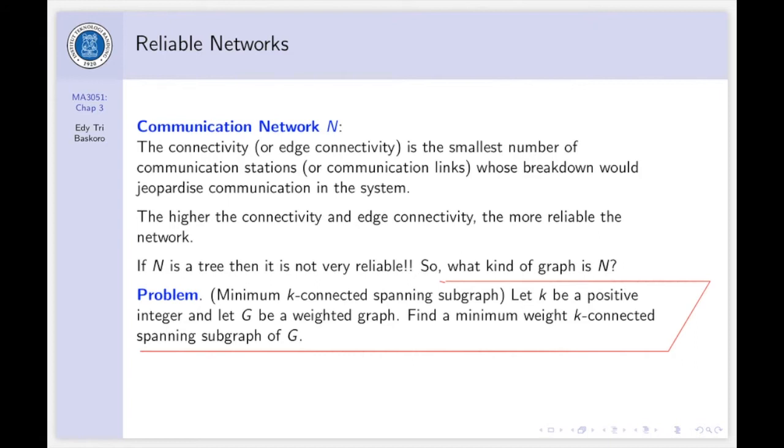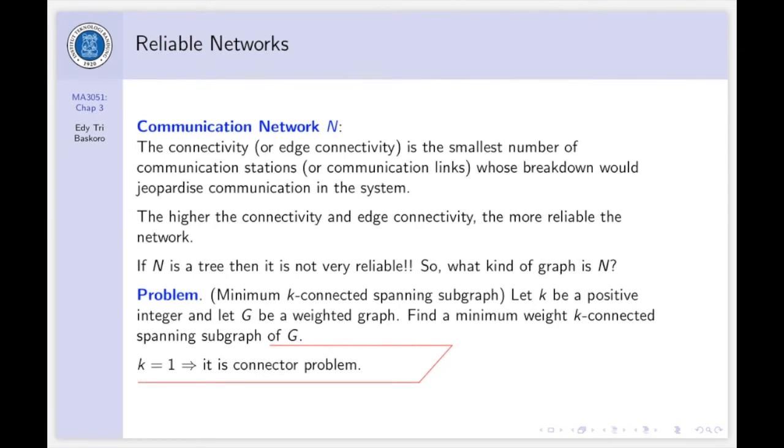We have the general problem in the following. We call that problem minimum K-connected spanning subgraph. Let K be a positive integer and let G be a weighted graph. Find a minimum weight K-connected spanning subgraph of G. If K equals 1, then this problem is a connector problem that we discussed in chapter 2. If K is greater than or equal to 2, then this problem is an unsolved and difficult problem. But if G is complete, then the problem becomes easier.